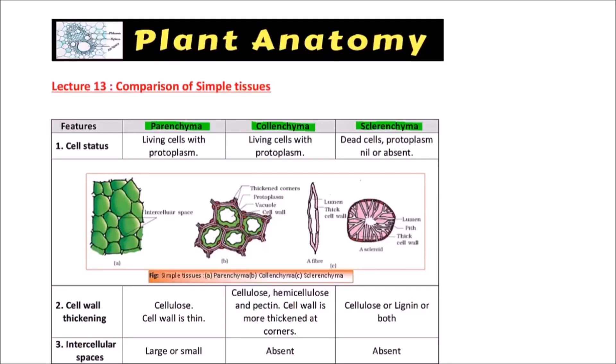Welcome to Studio Biology. In this video on plant anatomy, I am going to discuss the comparison between the simple tissues: parenchyma, collenchyma, and sclerenchyma. Cell status is that parenchyma cells are living, collenchyma cells are living with protoplasm, both are having protoplasm, but sclerenchyma cells are dead cells and protoplasm is either nil or absent.